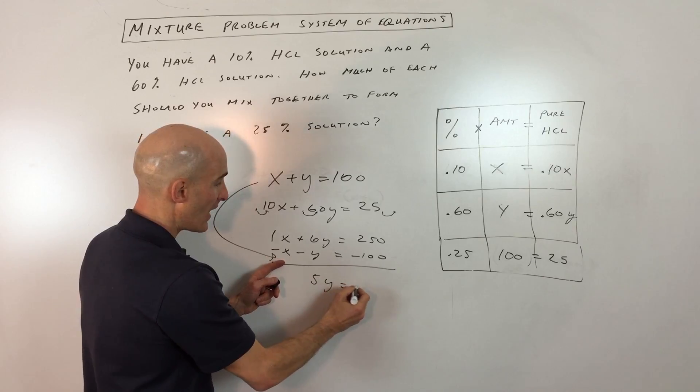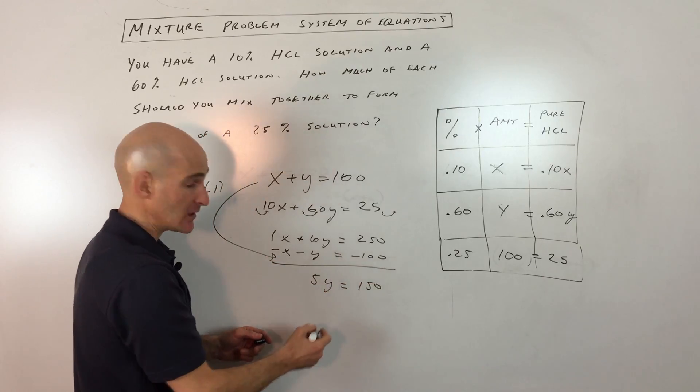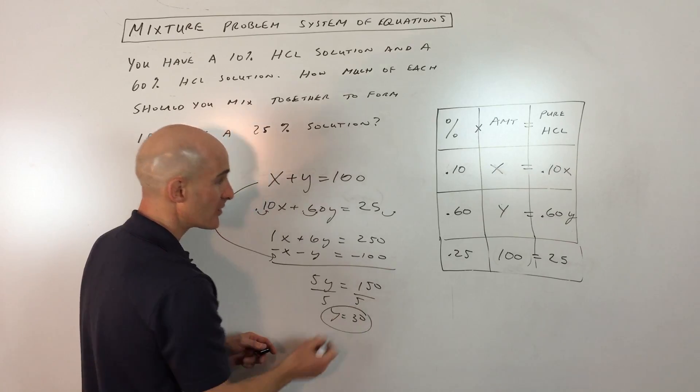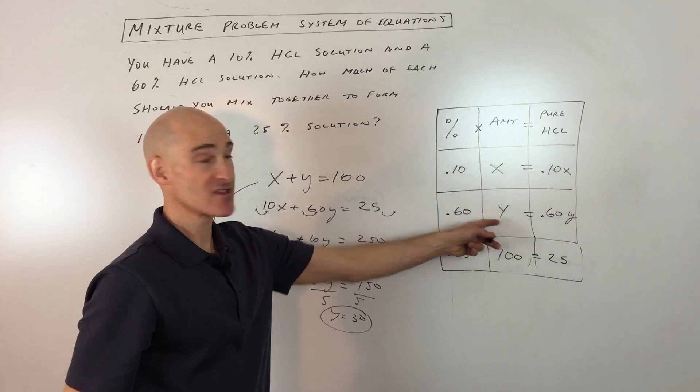This gives us 5Y, and this equals 150. So if we divide both sides by 5, you can see that Y is going to equal 30 milliliters. So we're going to have 30 milliliters of the 60% solution.